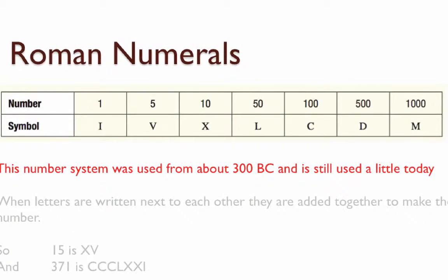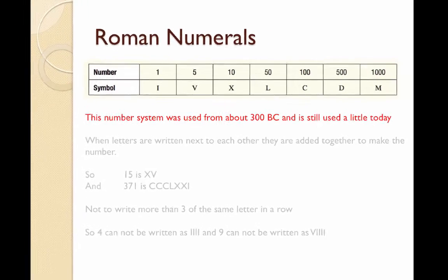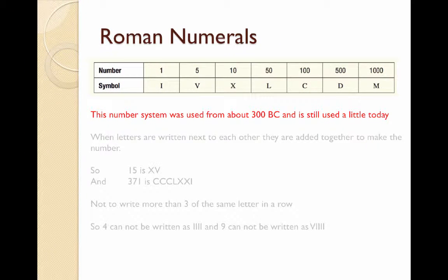Here we have the Roman numerals number system. It uses capital letters to represent different values and different numbers. This number system was used from about 300 BC and is still used a little bit today when you look at the end of movies for dates as well as for some page numbers in books.